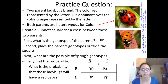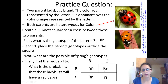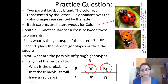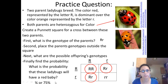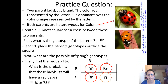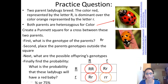What is the probability that these ladybugs will have a red baby? Since red is dominant and represented by big R, the squares that show a red phenotype are: the first box with both big R's, the next one with a big R, and this one as well. That's three out of four squares, or 75%. So these ladybugs have a 75% chance of having a red ladybug and a 25% chance of having an orange ladybug.